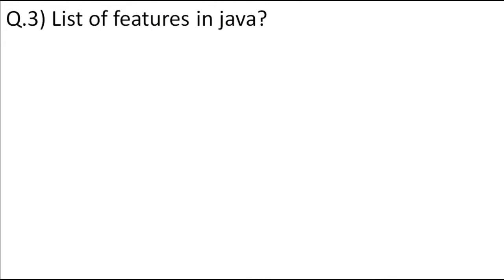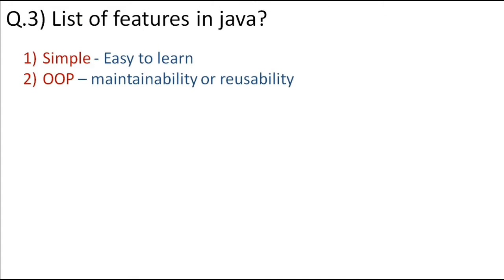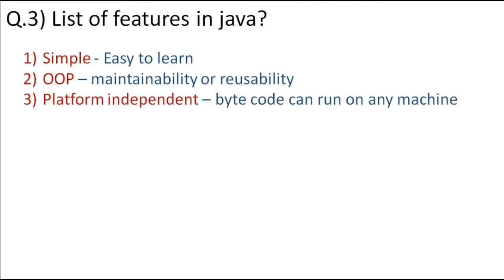The next question is: list a few features of Java. First, Java is a simple language because it is easy to learn. Second, it is object-oriented, which is a major feature — because Java uses object-oriented principles, code is easily maintained and reusability is achieved. Third, it is platform-independent or portable, because once the code is converted to bytecode, that bytecode can run on any platform — Windows, Linux, etc.